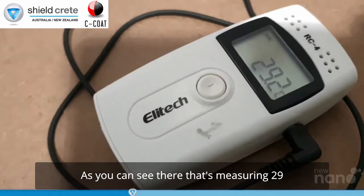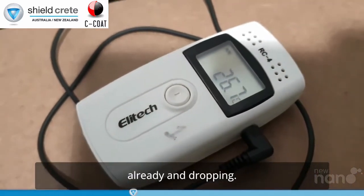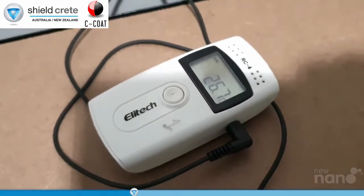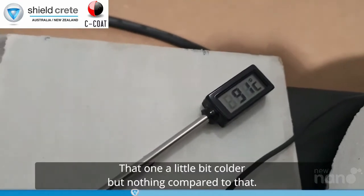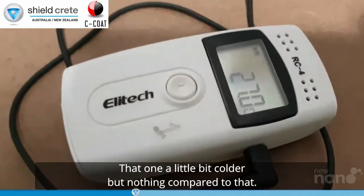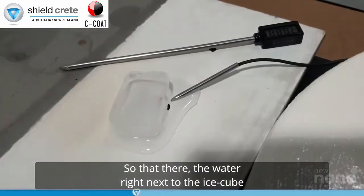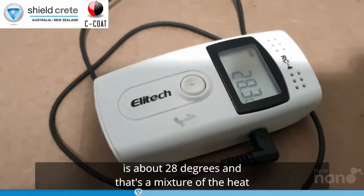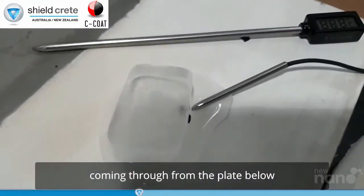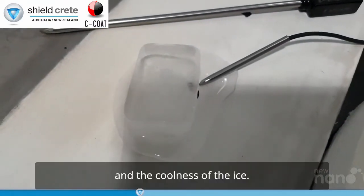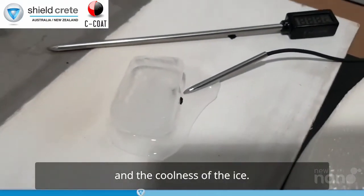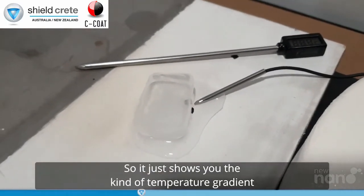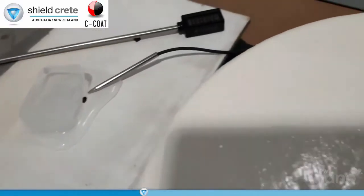As you can see there, that's measuring 29 already and dropping. That one's a little bit colder, but nothing compared to that. So that there, the water right next to the ice cube is about 28 degrees. And that's a mixture of the heat coming through from the plate below and the coolness of the ice. So it just shows you the kind of temperature gradient that you can withstand in half a millimeter of C-coat.